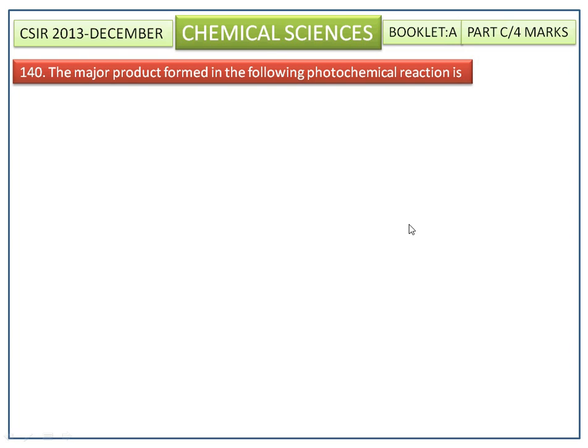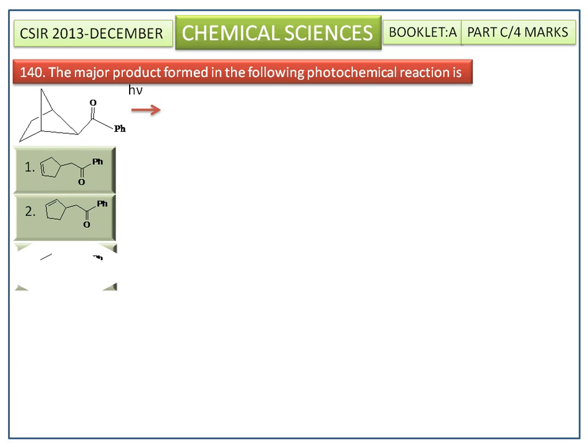The major product formed in the following photochemical reaction is — the options are given here.